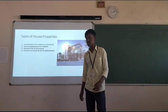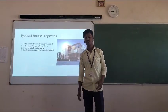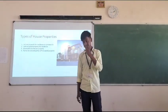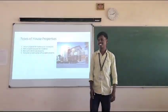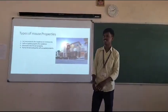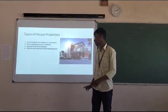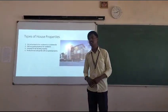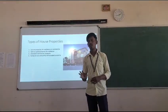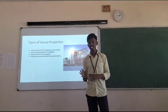The third type is deemed let-out property, which is treated as if it is let out for tax purposes, even if it is not actually rented. The fourth type is partially let-out property, where some portion of the property is rented out and the remaining portion is mainly used for residential purposes.